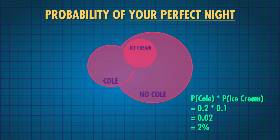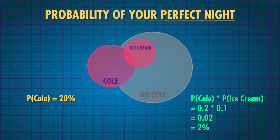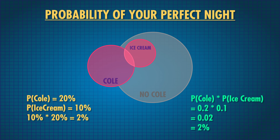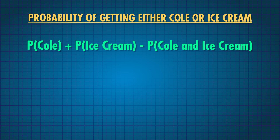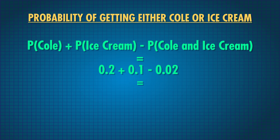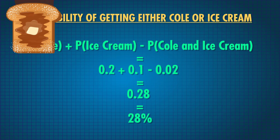When we want to know the probability of two things happening at the same time, we first look at only the times when one thing — Cole Sprouse at IHOP — is true, which is 20% of the time. Out of all those Cole nights, how often is it free ice cream time? Only 10% of Cole nights. So 10% of the original 20% leaves only a 2% chance that both will happen at the same time. But you can always calculate the probability of getting either by using the addition rule — Cole or free ice cream — which is P of Cole plus P of free ice cream minus P of both, so we don't double count anything. You realize there's a 28% chance that something good will happen tonight, so you decide to go. No matter what, you're going to get French toast.